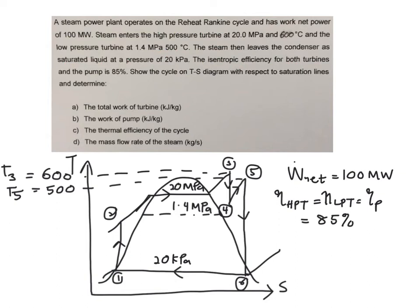Your TS diagram will now have some amendments to account for isentropic efficiency. You will have the actual value at the exit of your pump, the actual value at the exit of your high pressure turbine, and the actual value at the exit of your low pressure turbine.